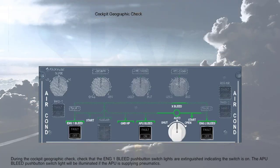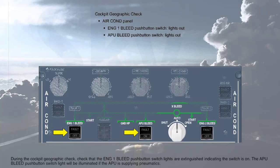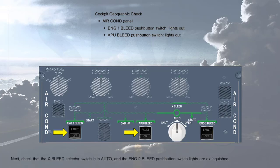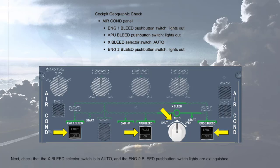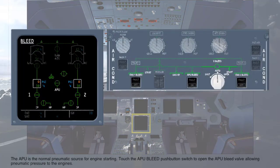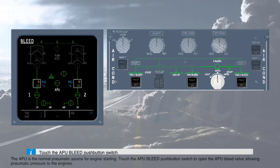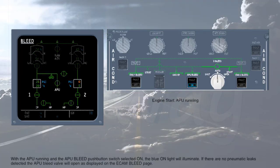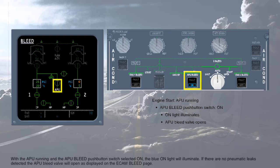During the cockpit geographic check, verify that the engine 1 bleed push-button switch lights are extinguished, indicating the switch is on. The APU bleed push-button switch light will be illuminated if the APU is supplying pneumatics. Check that the cross-bleed selector switch is in auto and the engine 2 bleed push-button switch lights are extinguished. The APU is the normal pneumatic source for engine starting. Touch the APU bleed push-button switch to open the APU bleed valve, allowing pneumatic pressure to the engines. With the APU running and the APU bleed push-button switch selected on, the blue ON light will illuminate. If there are no pneumatic leaks detected, the APU bleed valve will open as displayed on the ECAM bleed page.